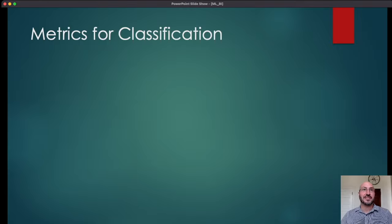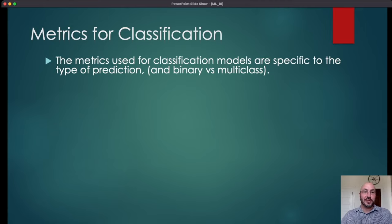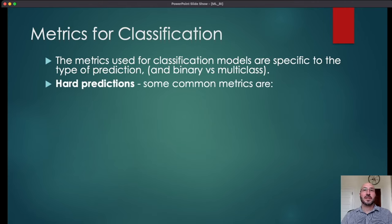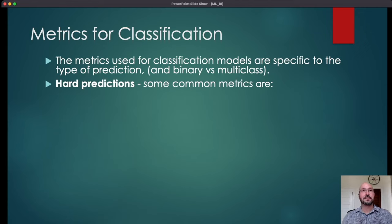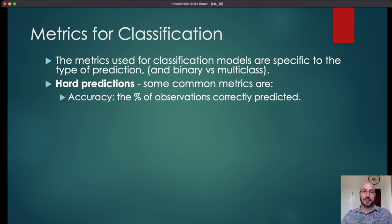So what are some of the metrics we use in classification? The metrics used are specific to the type of prediction — hard predictions, ranking predictions, and probabilistic predictions — and there are also distinctions between binary and multi-class classification. For hard predictions, where we simply guess which class the outcome Y is in, perhaps the most common metric is accuracy: what percentage of the observations did we correctly predict? This is very natural — it's basically the metric used on school tests.